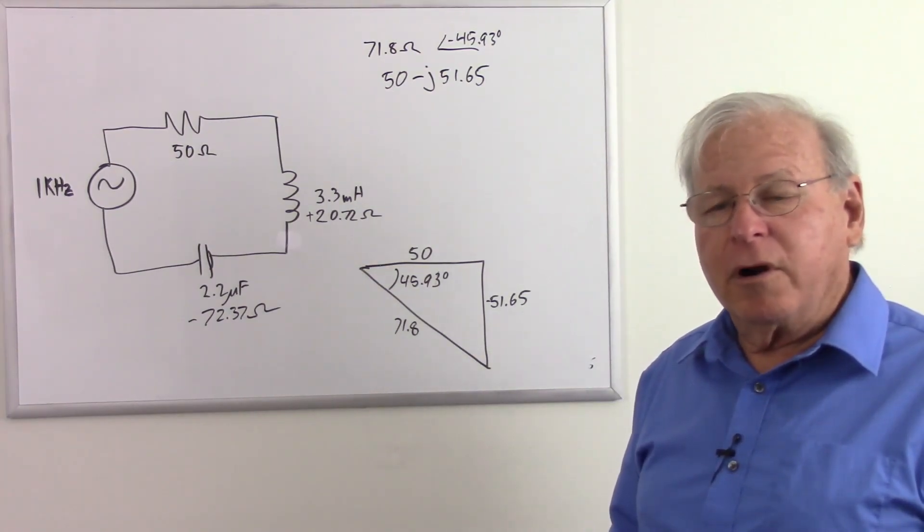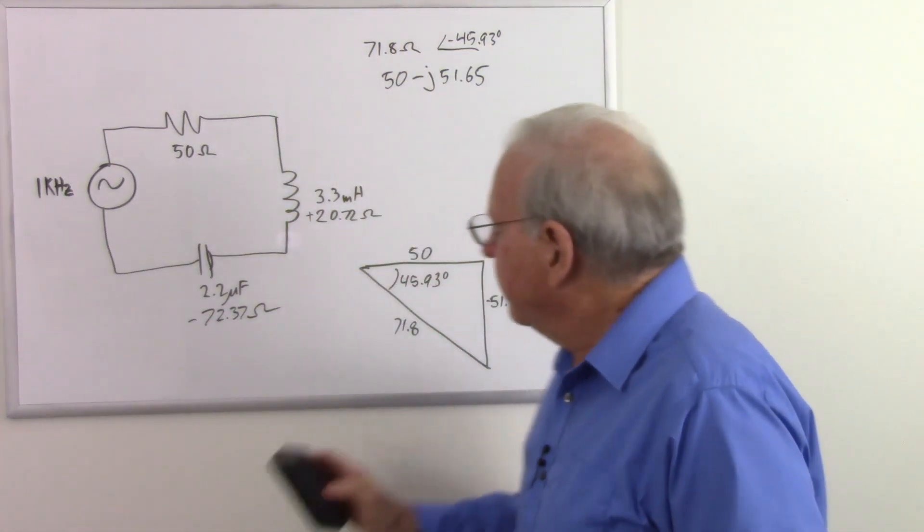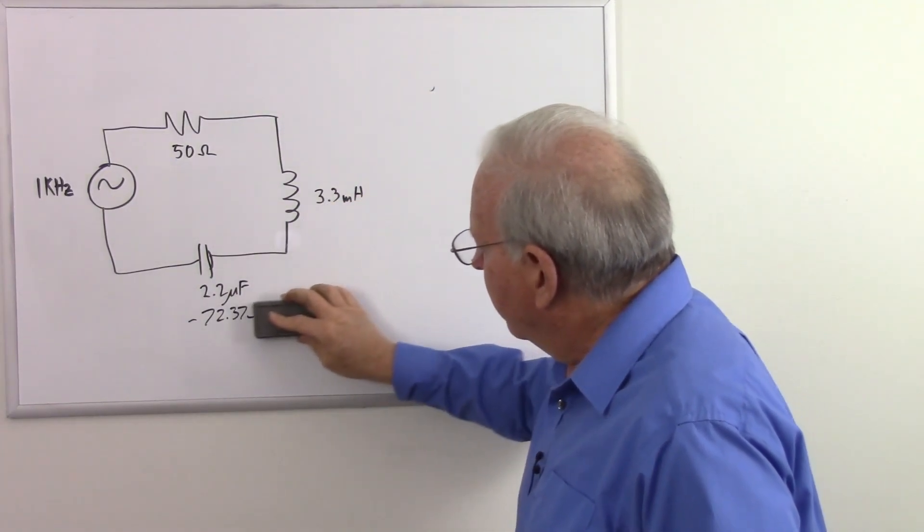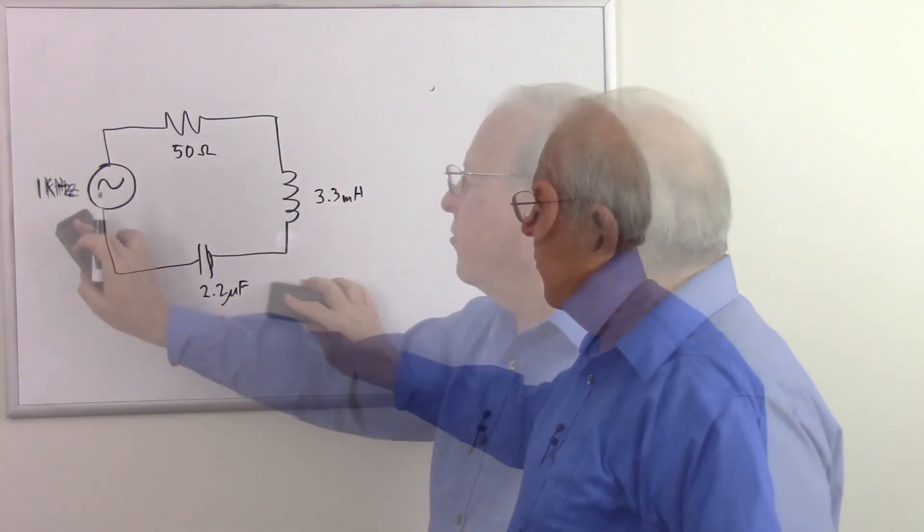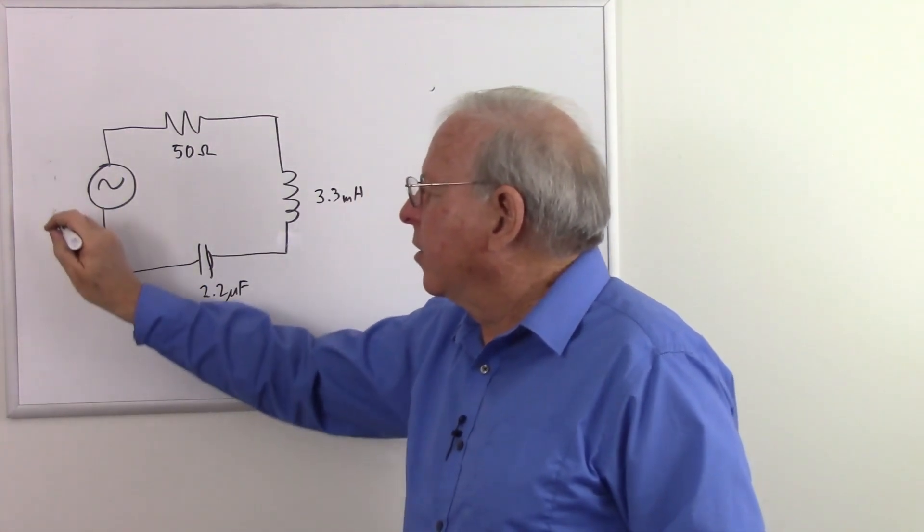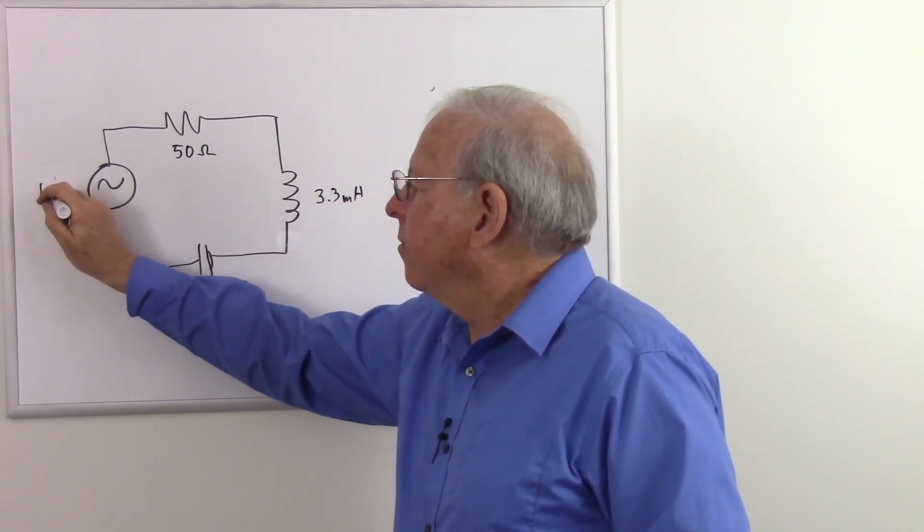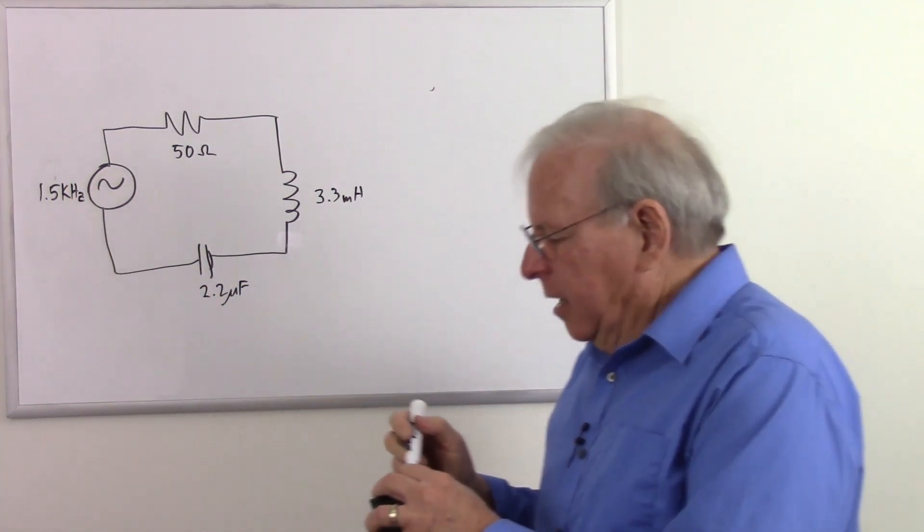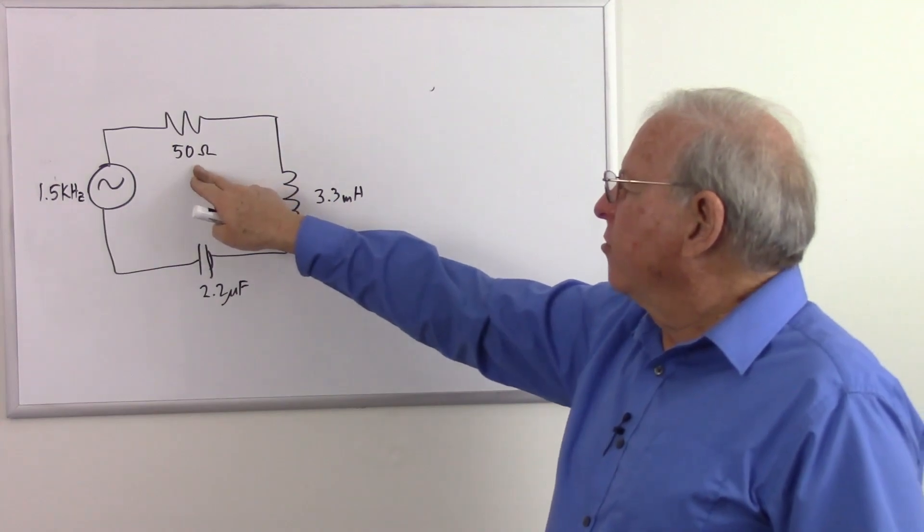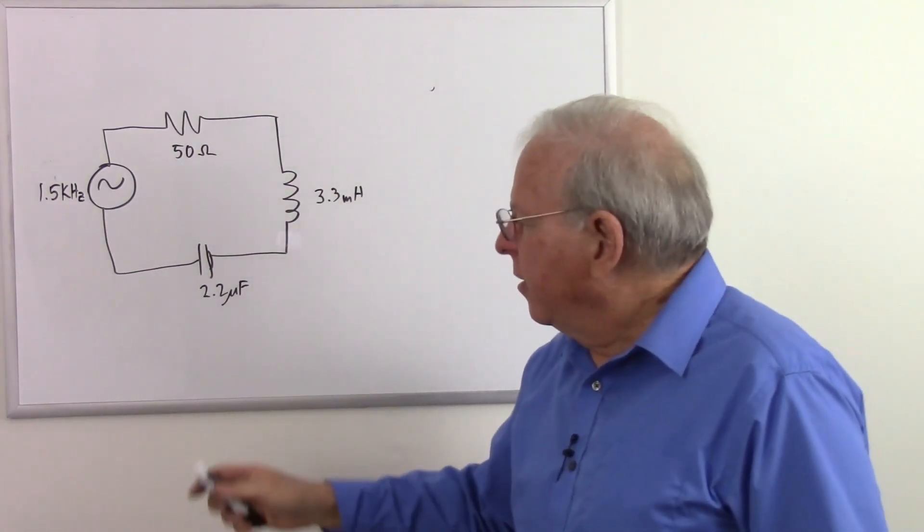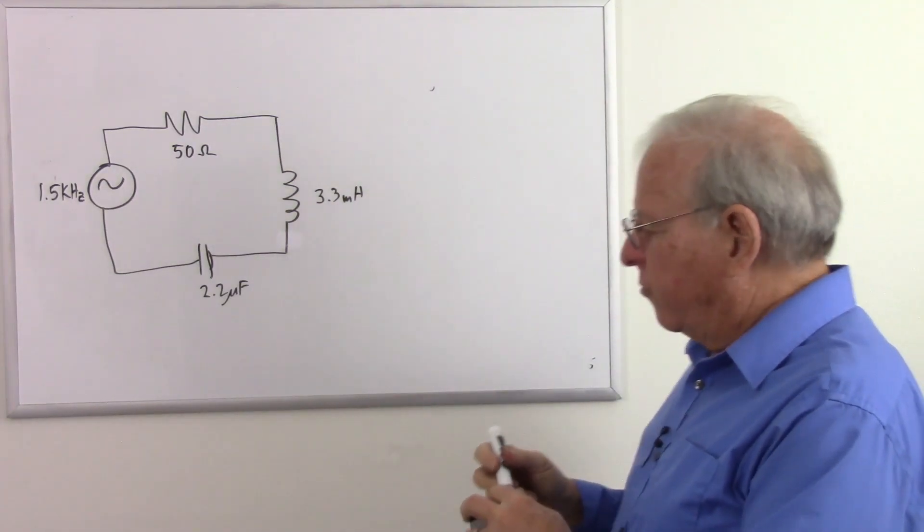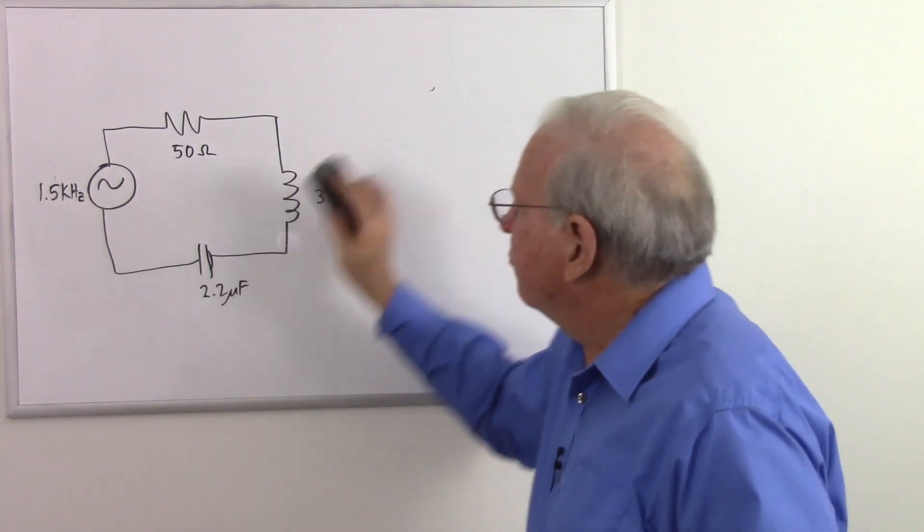Let's do one more and call it an exercise. So let's erase these numbers here. What do we want to change? Let's change this to 1.5 kilohertz. Not much of a change. Resistance will stay the same. This will double, that will cut in half, but we'll just redo the calculations, because that's what we're doing. We're practicing the calculations.